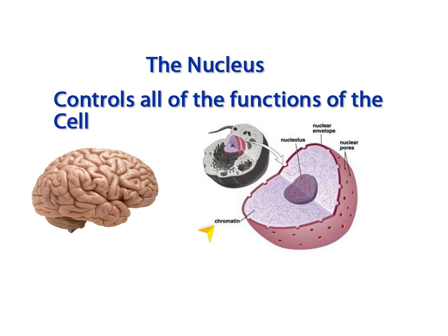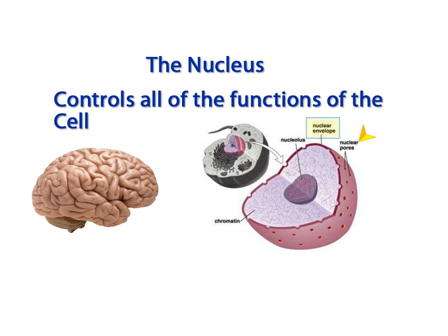This genetic material will provide the instructions for cell functions, such as which type of protein to produce and when. The instructions will leave the nucleus on a messenger molecule through a pore in the nuclear membrane. The nuclear membrane, then, controls the movement of material into and out of the nucleus.